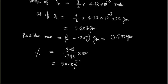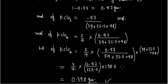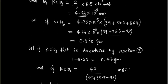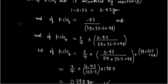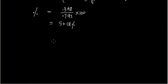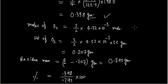We have some rounding error. If we use more decimal places — for example, using more digits for 4.33 × 10⁻³ — we get 49.9%, which is very close to 50%. So the answer in this case is around 50%.